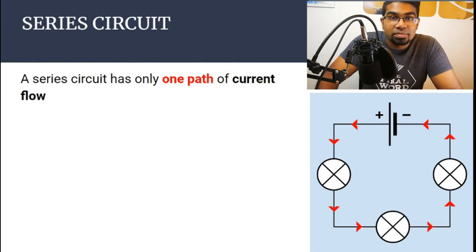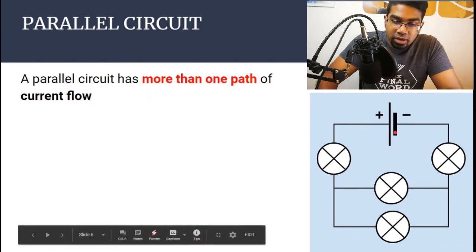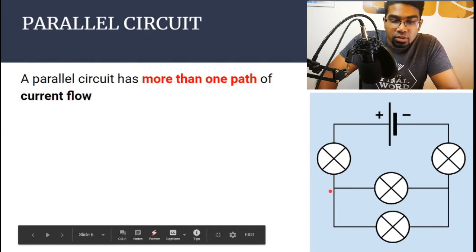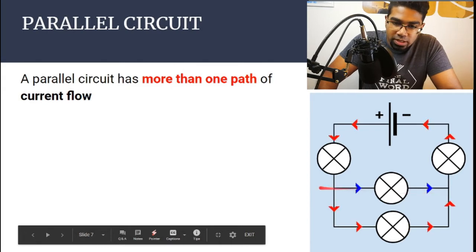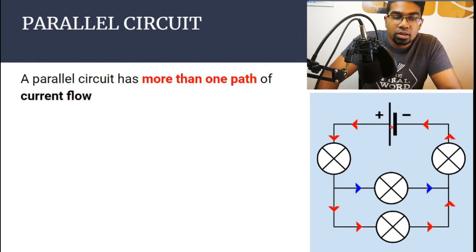Now let's compare this with a parallel circuit. A parallel circuit is any circuit that has more than one path of current flow. Current flows from the positive terminal to the negative terminal. After it passes through the first bulb, it comes to a junction where some of the current takes one path and some takes another. Then they join back and go to the negative terminal. A parallel circuit is when current has more than one path it can take.